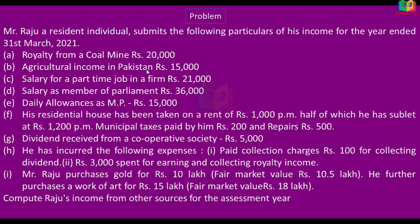Agricultural income in Pakistan, Rs. 15,000. Agricultural income in India is exempted, but this is in Pakistan, so this income from other sources is taxable. Salary for a part-time job in a firm, Rs. 21,000. Salary for the part-time job is salary income from other sources.